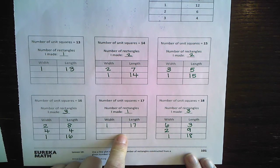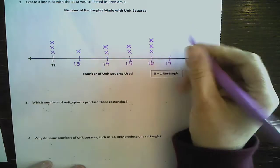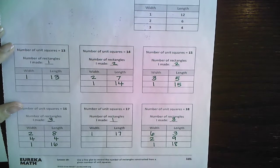How about 17? Did you just get the one? Yeah, there's nothing else you can multiply to get 17, right? So just the one.